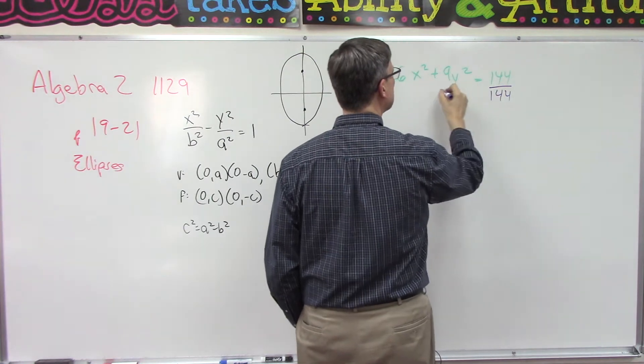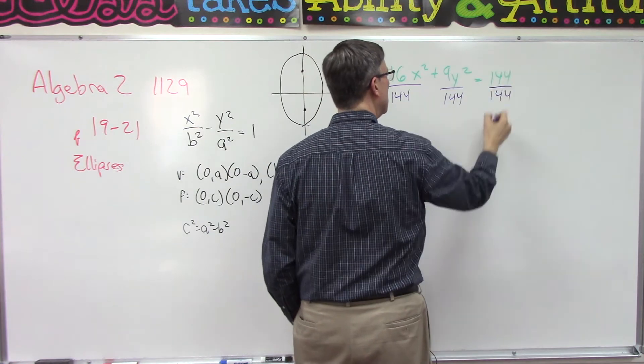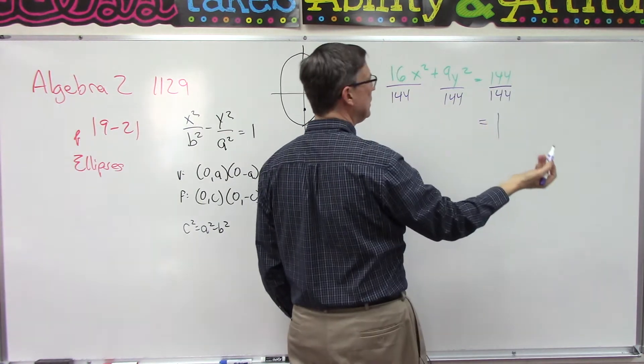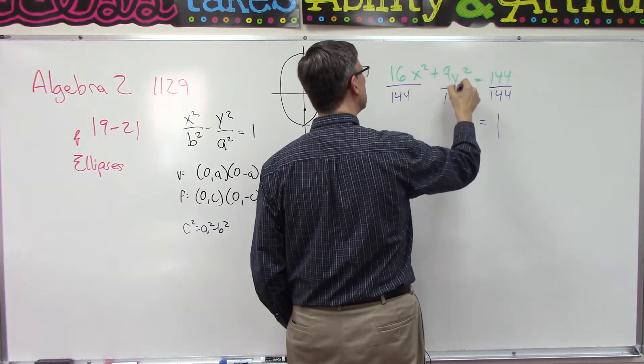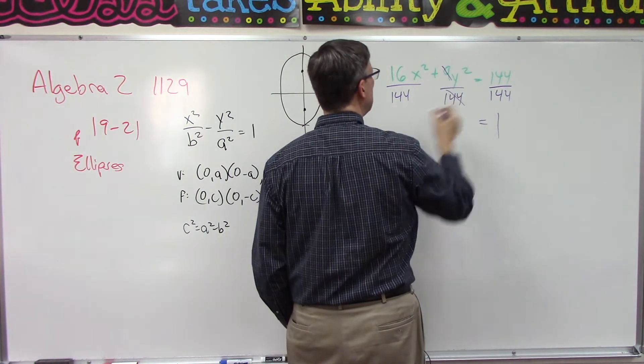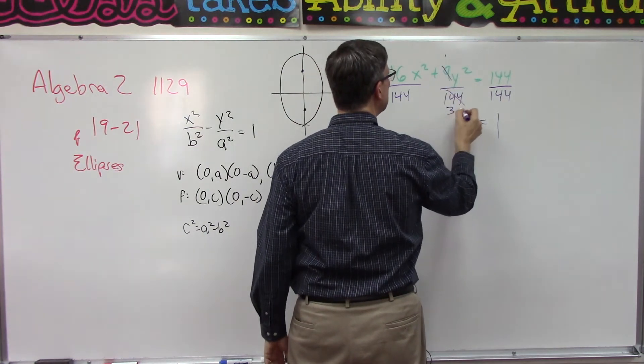By doing that, that will become one—anything divided by itself is one. We're going to reduce this, so 144 divided by 9, we get one and we get 36.